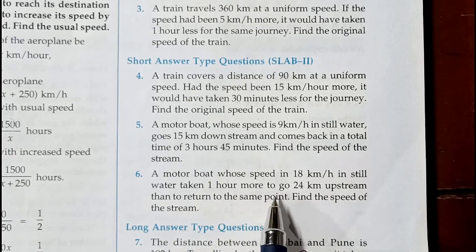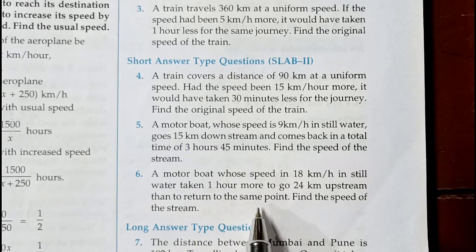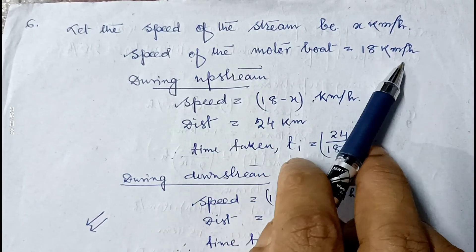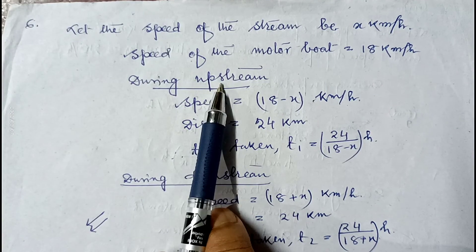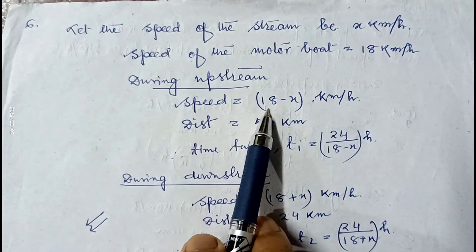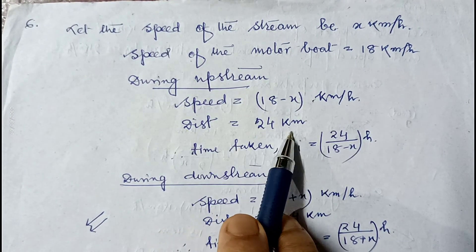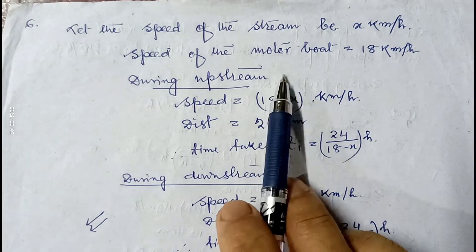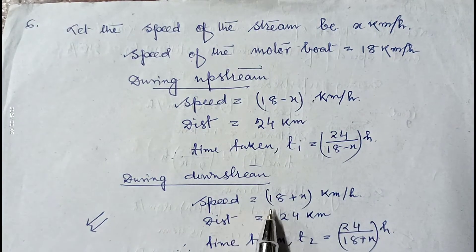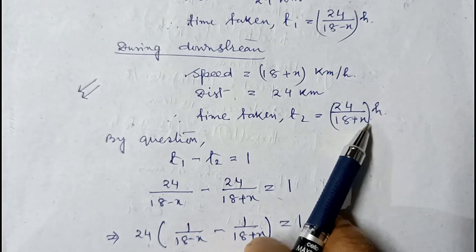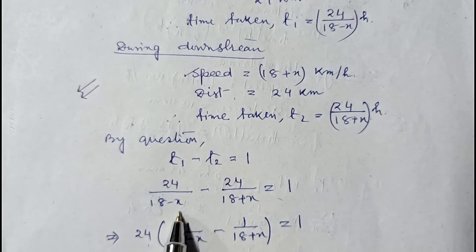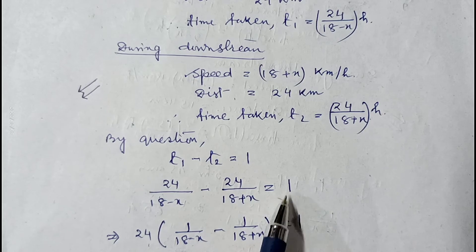Question number 6: A motorboat whose speed is 18 kilometer per hour in still water takes one hour more to go 24 kilometer upstream and then return to the same point. Find the speed of the stream. Let the speed of the stream be x km/h. During upstream, speed is 18 minus x; distance is 24 km, so t1 = 24/(18 minus x). During downstream, speed is 18 plus x; t2 = 24/(18 plus x).